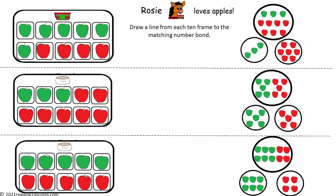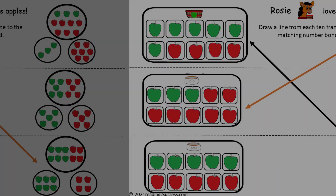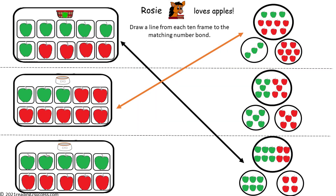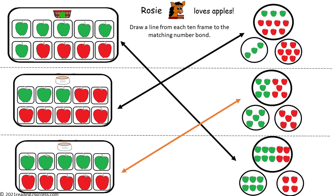Now have kids draw a line from each 10 frame to the matching number bond. Examples include: 6 green apples plus 4 red apples equals 10, and 5 green apples plus 5 red apples equals 10. This is a completed example.